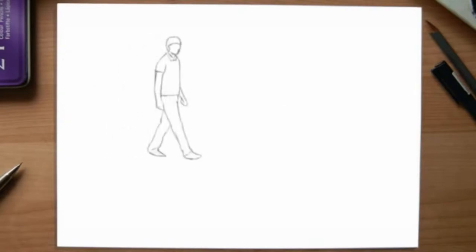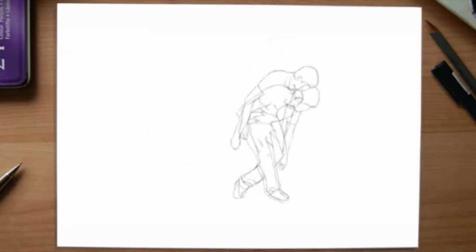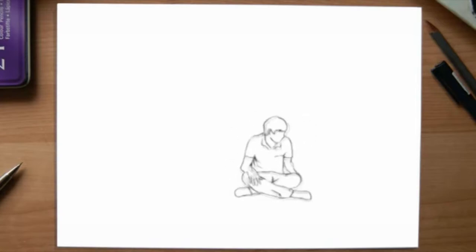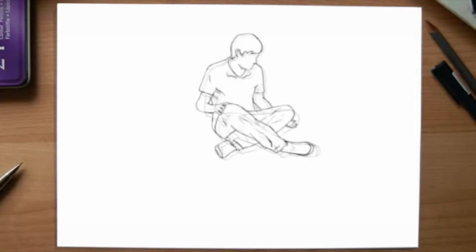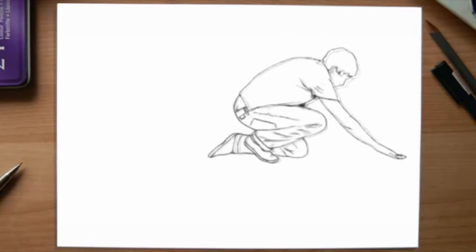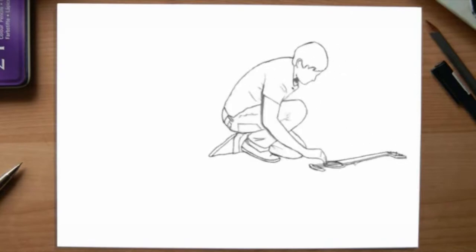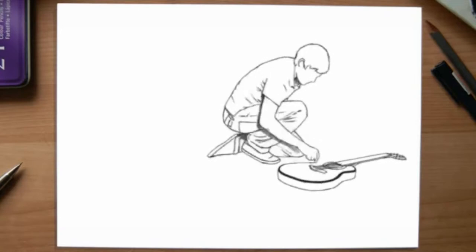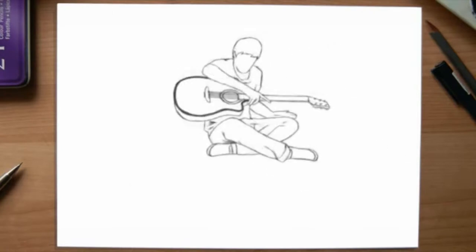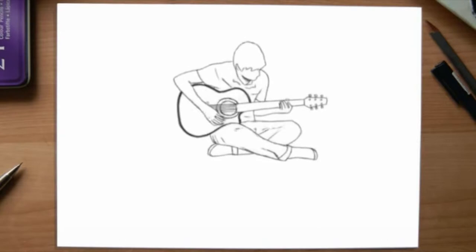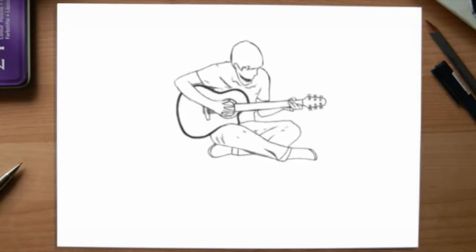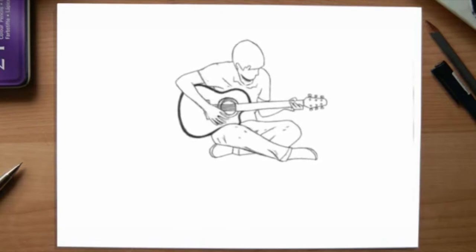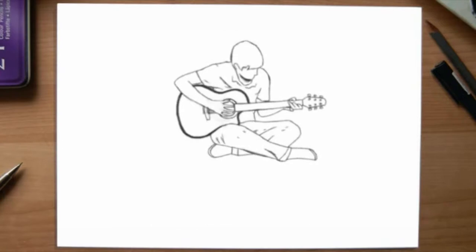Rotoscoping is the projected display of a sequence of usually photographed action image frames so that the artist can trace from the frame or create an image to superimpose on it. It is an animation technique in which animators trace over footage frame by frame for use in live action and animated films. Originally, recorded live action film images were projected onto a frosted glass panel and redrawn by an animator. This projection equipment is called a rotoscope. Although this device was eventually replaced by computers, it was invented by Max Fleischer in 1915.